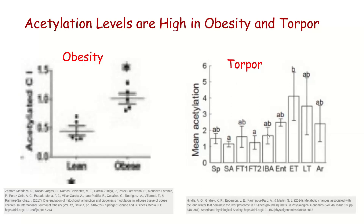Looking at torpid animals across different parts of the year: summer active animals have acetylation levels at their lowest. At entrance into torpor — when they're getting ready to hibernate — acetylation levels go up. By early torpor, as they become torpid, acetylation levels really explode. So torpid animals are looking a lot like obese humans in terms of mitochondrial acetylation.